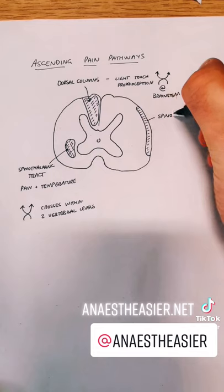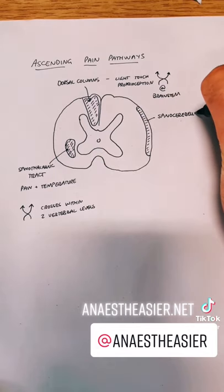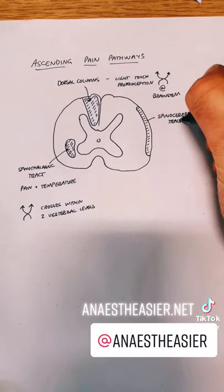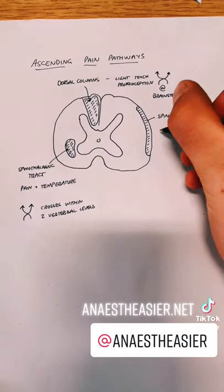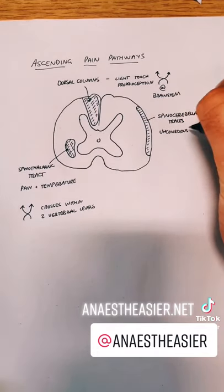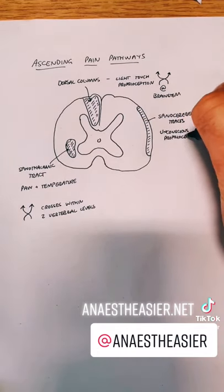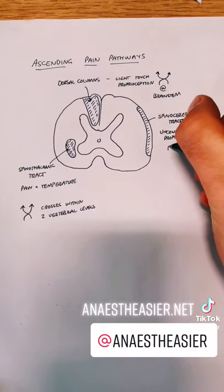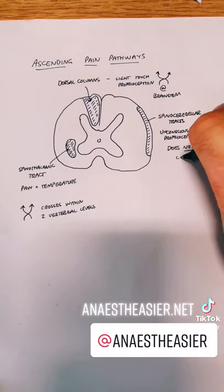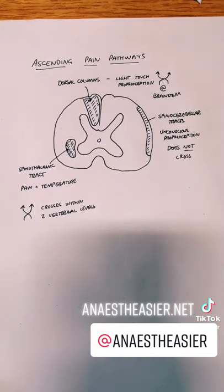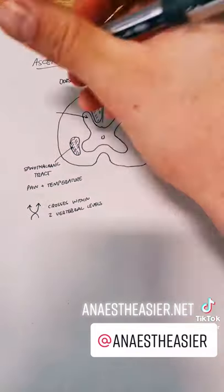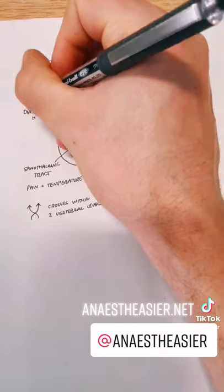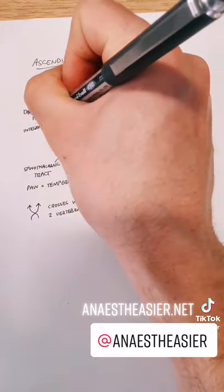Finally, we have the spinocerebellar tracts, which carry unconscious proprioception. These don't cross over — hence I've drawn them on the other side as a memory aid — but remember there are two of each of these pathways, one on each side, to cover each side of the body.